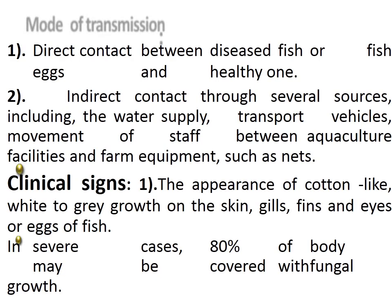Mode of transmission of saprolegniasis: direct contact between diseased fish or fish eggs and healthy ones, or indirect contact through various sources including water supply, transport vehicles, movement of staff between aquaculture facilities, and farm equipment such as nets. Clinical signs include the appearance of cotton-like white to grey growth on skin, gills, fins, and eyes, or on eggs of fish.